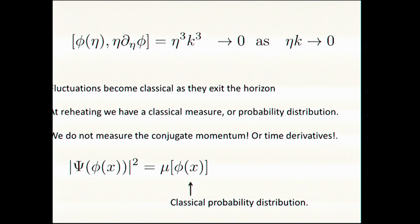This results in the fact that at reheating, by the time the universe is reheated, for all these modes that we'll ever observe, we basically are going to have a classical probability distribution. In fact, we don't measure the conjugate momentum. We don't even in practice measure the time derivative. So in the end, we are having a classical probability distribution for the shape of the curvature of the universe at reheating.